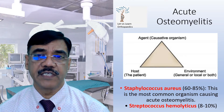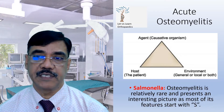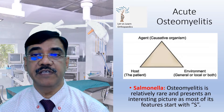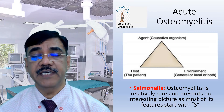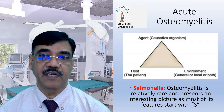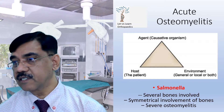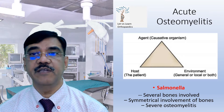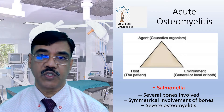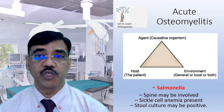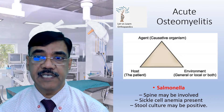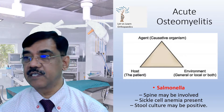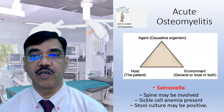The second S-series organism accounts for 8 to 10% of cases. The third is Salmonella. Osteomyelitis due to Salmonella is relatively rare and presents an interesting picture, as most of its features also start with S: several bones involved, symmetrical involvement of bones, severe osteomyelitis, spine may be involved, sickle cell anemia is often present, and stool culture may be positive. Remember these six S characteristic features of Salmonella osteomyelitis.